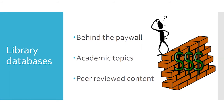Another important difference is that library databases are aimed at academic content. If you're researching sharks, you're not going to find the Baby Shark video, but you will find journal articles about shark behavior, biology, or history. A lot of information in library databases is also peer reviewed, which means when a journal publishes an article, other professionals in that field review the content first to make sure it meets the standards of that field. Wikipedia articles, by contrast, are not subject to that sort of filtering.